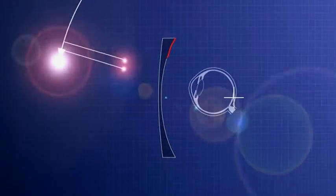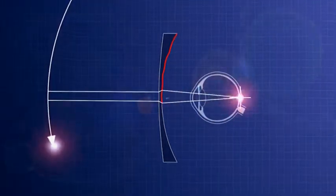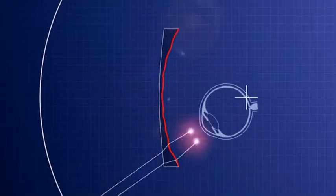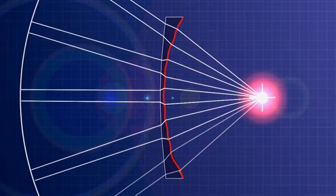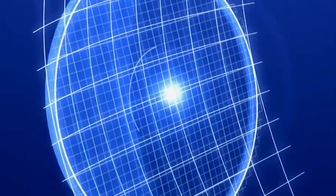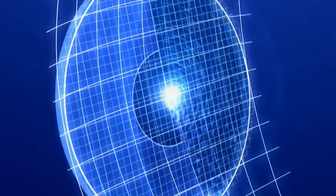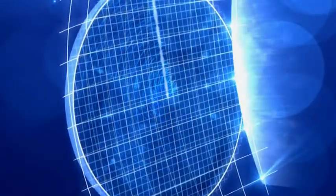This procedure is repeated for every direction of sight until the entire back surface of the lens is adjusted and all simulated beams focus in the fovea. The result is a fully optimized lens, improved not only in the center but optimized all over the surface.